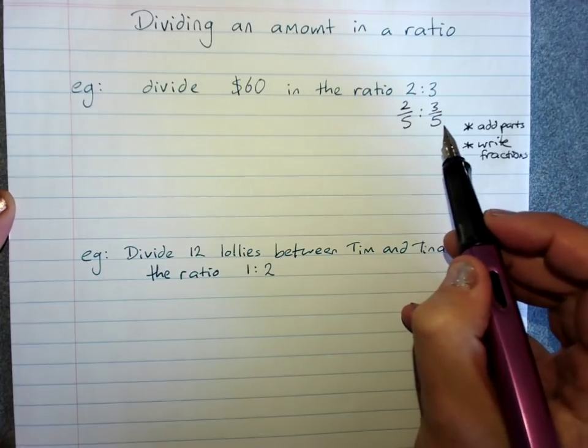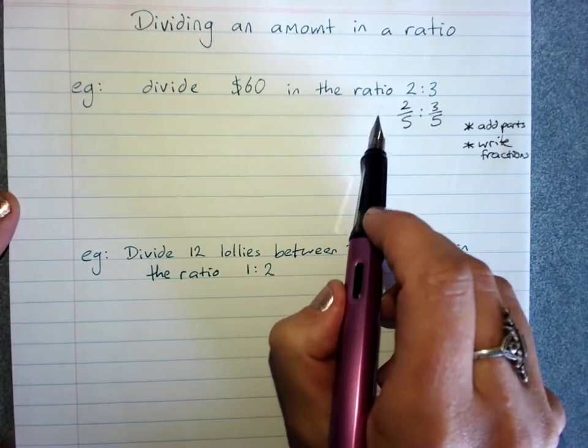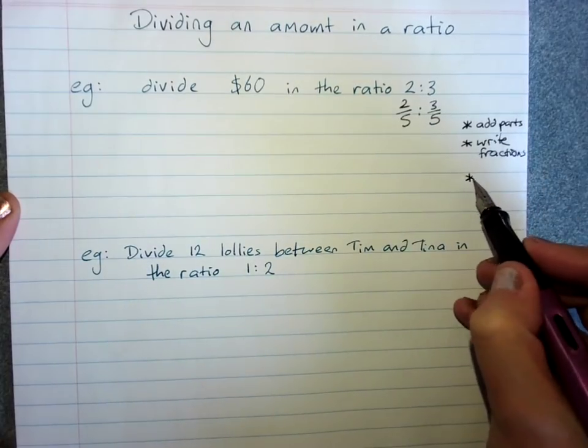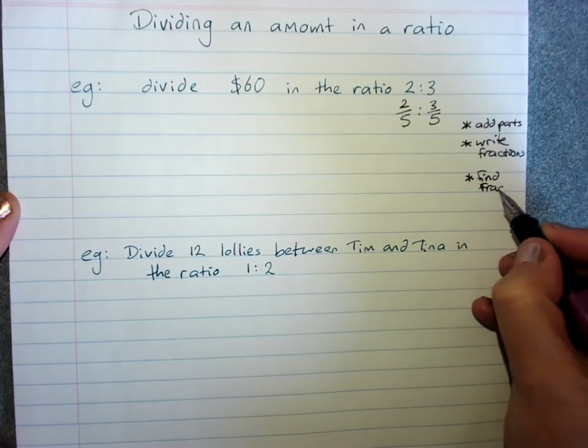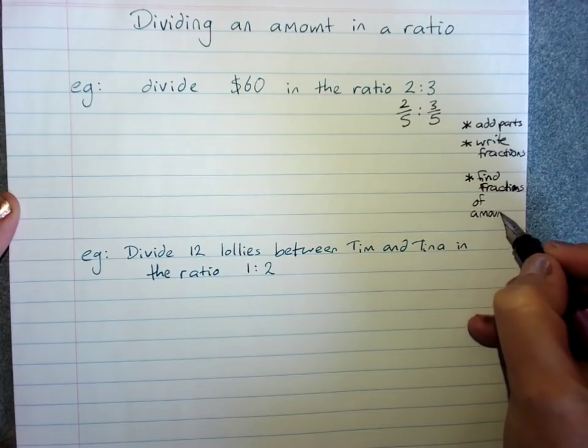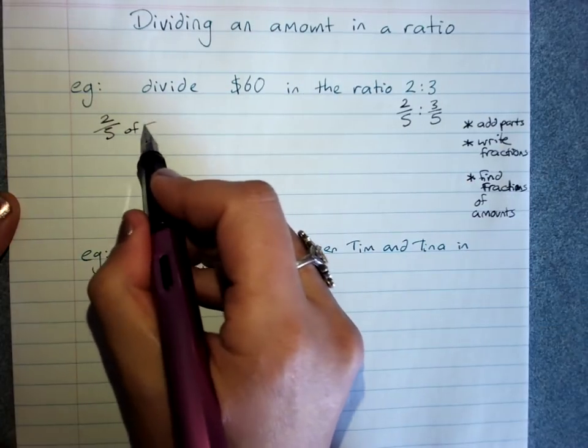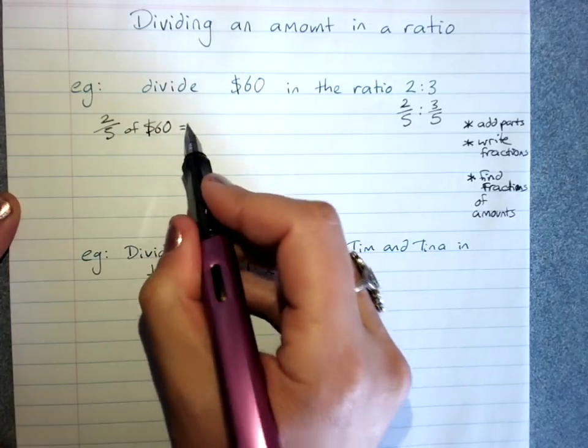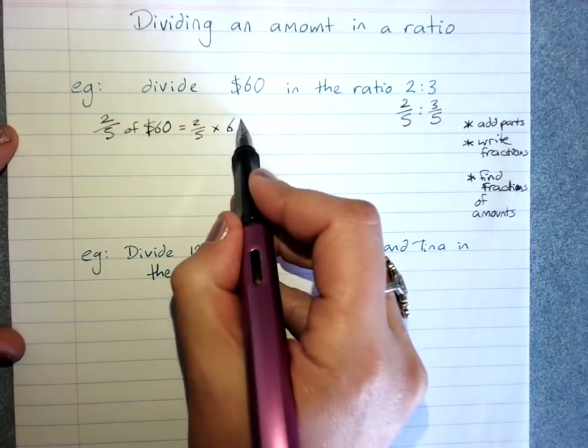This means three parts out of five, and we've got to divide sixty dollars so one person gets two-fifths and one person gets three-fifths. We know how to find a fraction of an amount. So remember, two-fifths of sixty dollars - we write the fraction, of becomes times, and the amount, so that will be two-fifths times sixty.